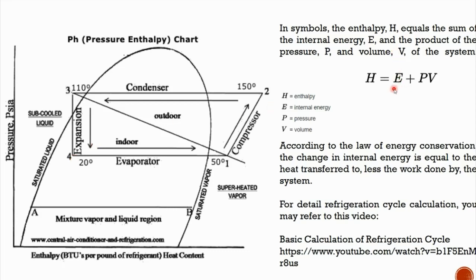Internal energy is a temperature-related term. In the evaporator, comparing point 4 and point 1, there is no work done because there is no mechanical system. But internal energy does change since the temperature is higher at point 1 — in the evaporator, the refrigerant absorbs heat from the space or surrounding. So the internal energy increases, which is why the enthalpy at point 1 is higher than the enthalpy at point 4.